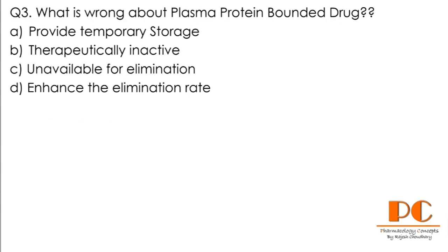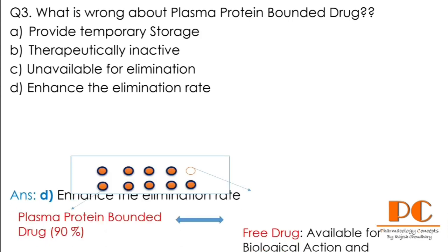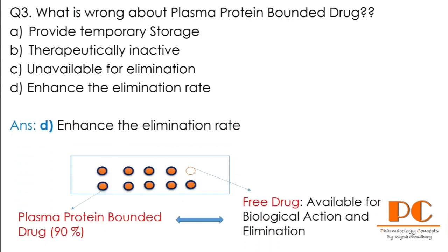Question number three: what is wrong about plasma protein-bound drug? Option A: provides temporary storage. Option B: therapeutically inactive. Option C: unavailable for elimination. Option D: enhances the elimination rate. The answer is D — enhances the elimination rate.